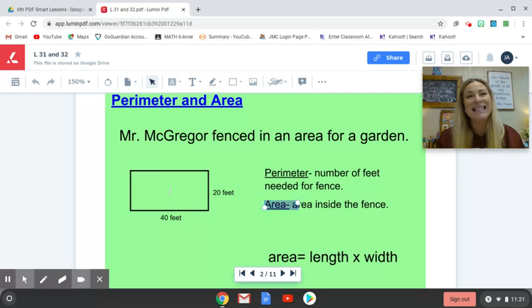Area, on the other hand, is the area inside of a space. So inside of here, inside of his garden. So in this case, anytime you find area, you take length times width. We would have 40 times 20. 4 times 2 is 8. 40 times 20 would be 800.